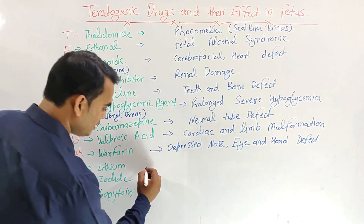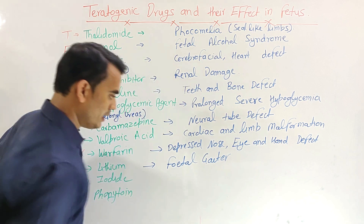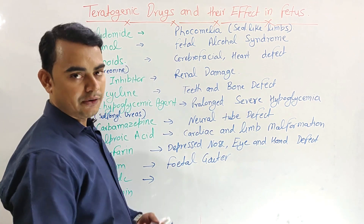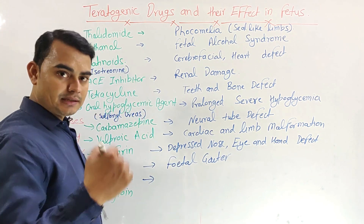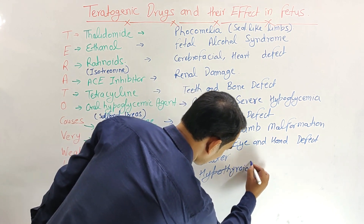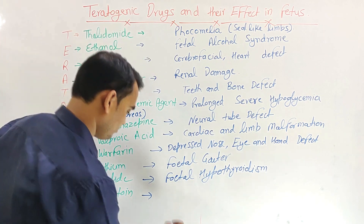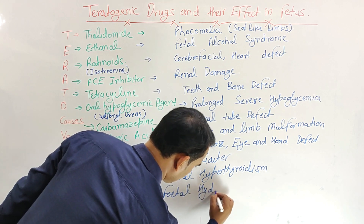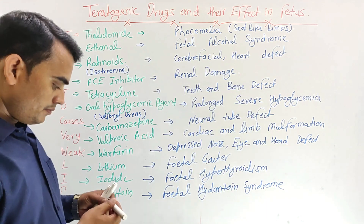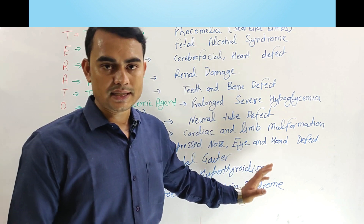Next, Lithium causes fetal goiter. Next, Iodide — if a pregnant lady takes iodide, it causes fetal hypothyroidism in the fetus. These are the teratogenic drugs and their side effects on the fetus. These are very important points — have a very good look at this. Thank you.